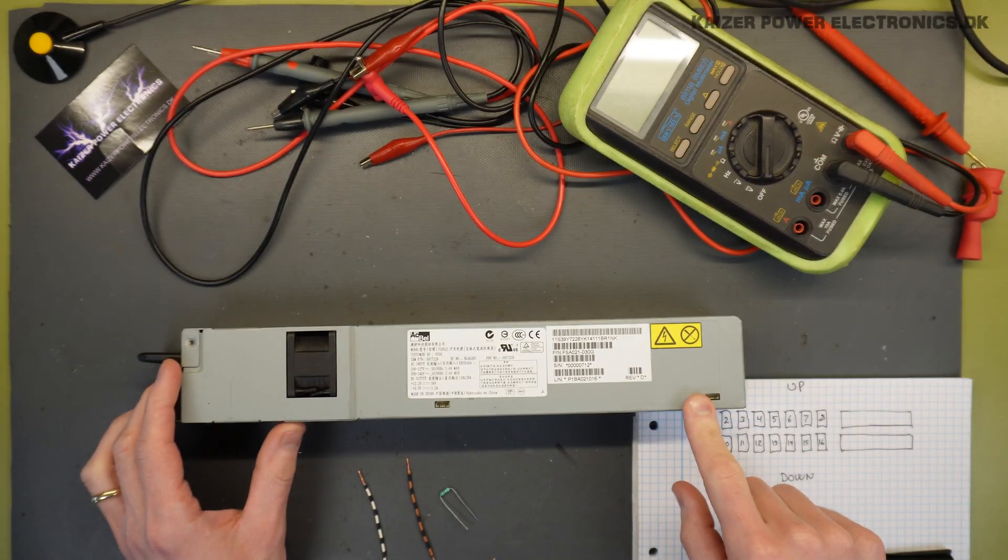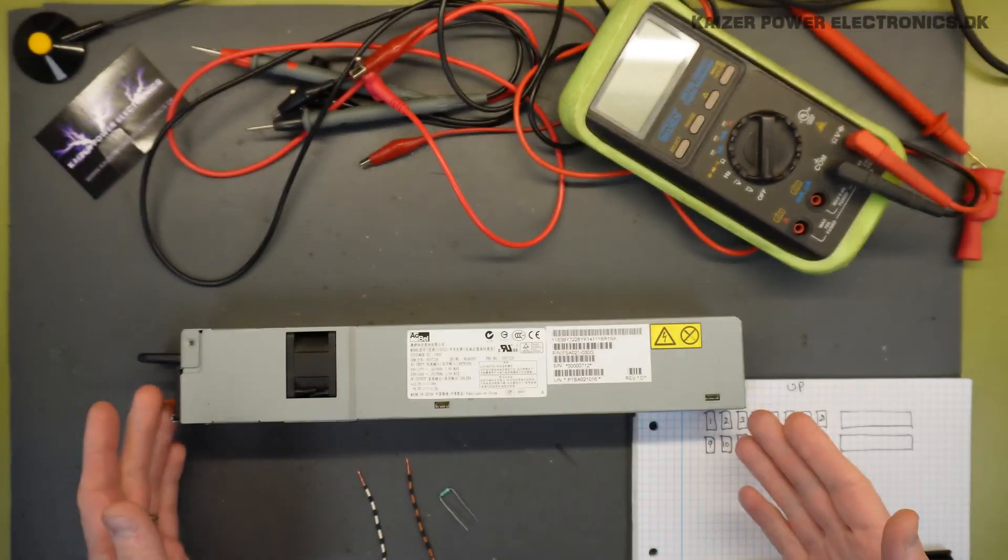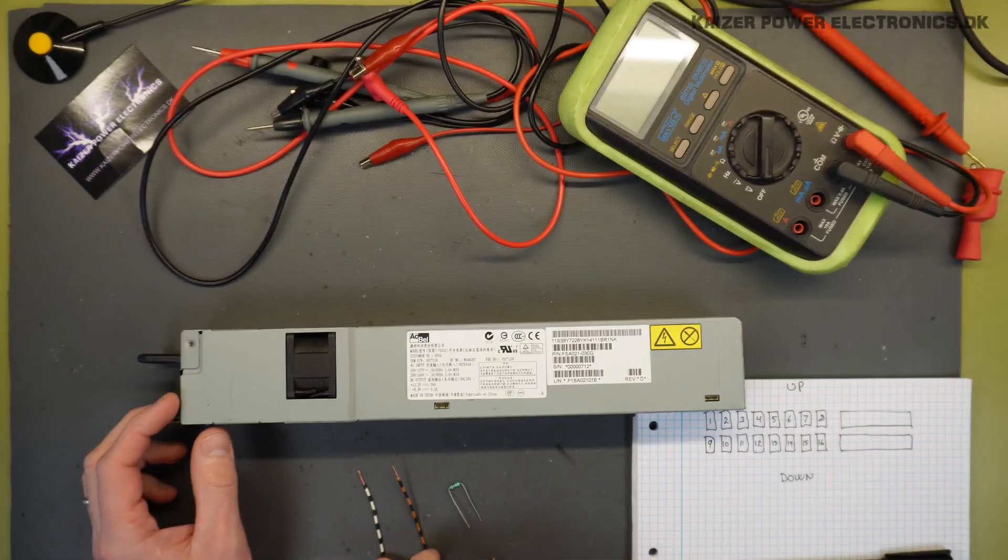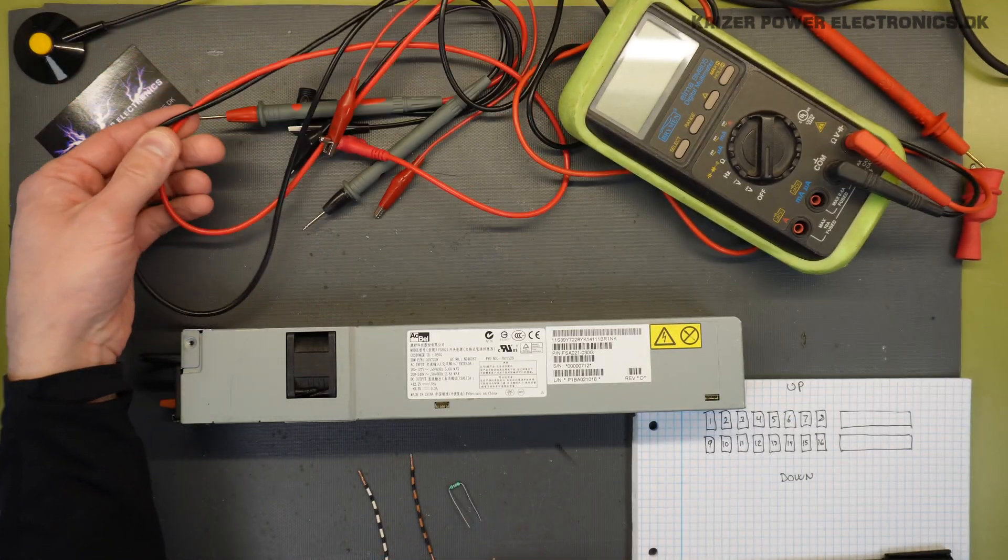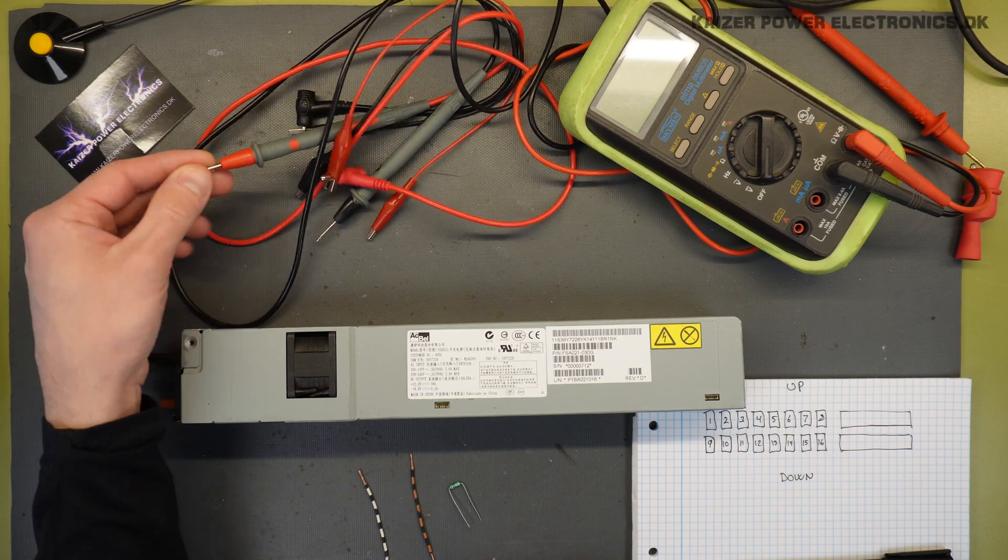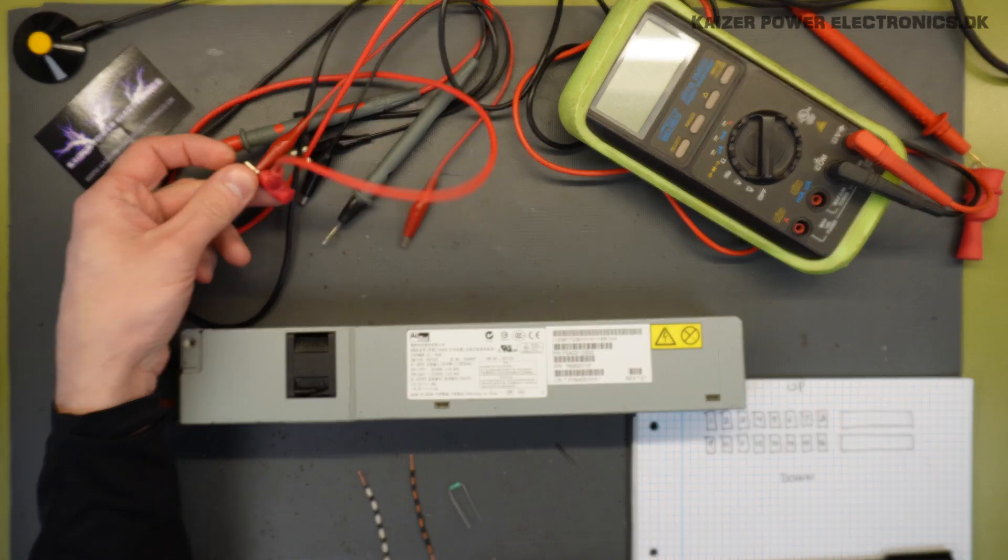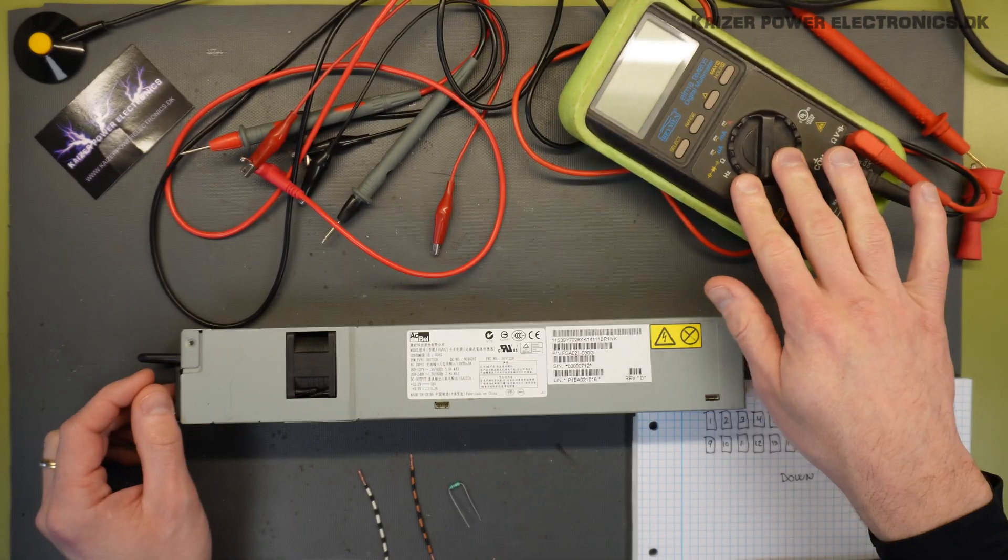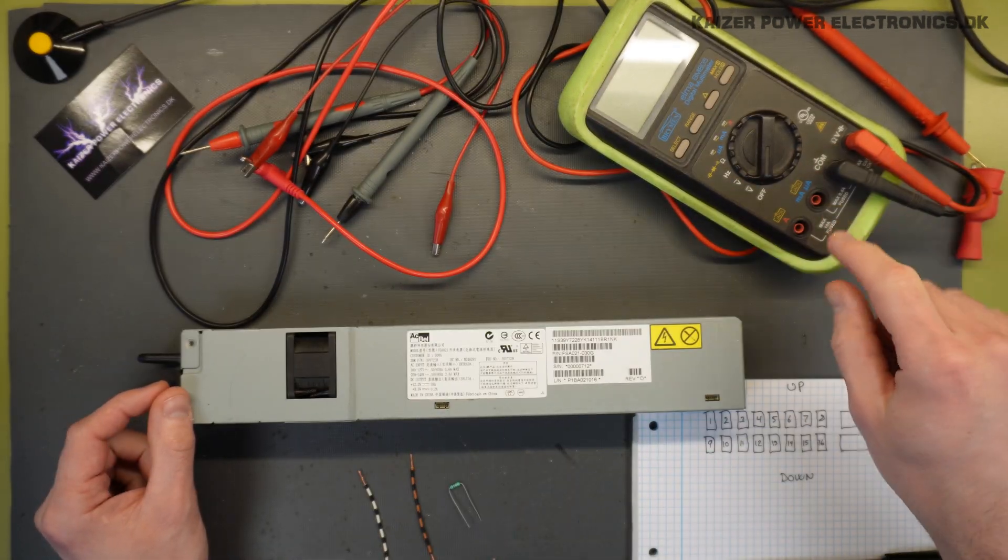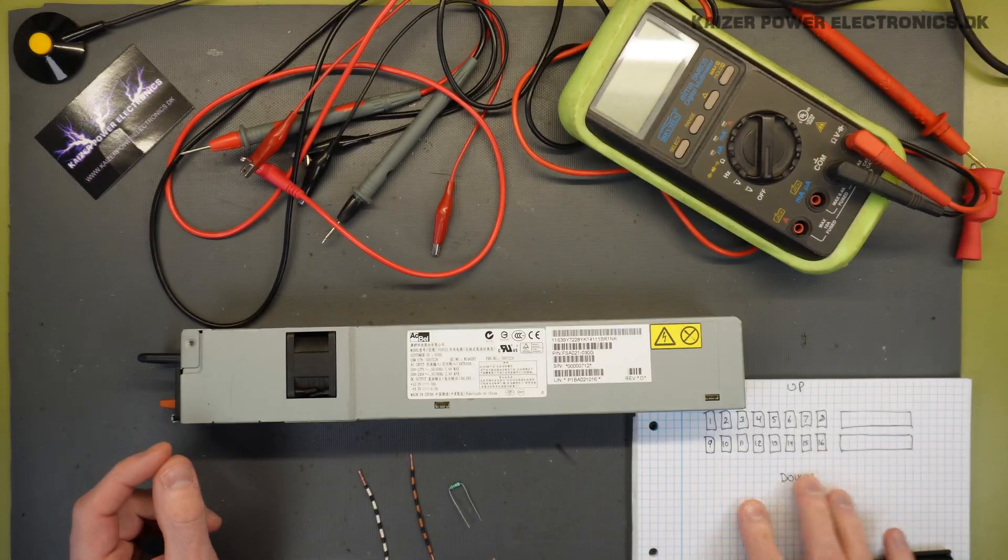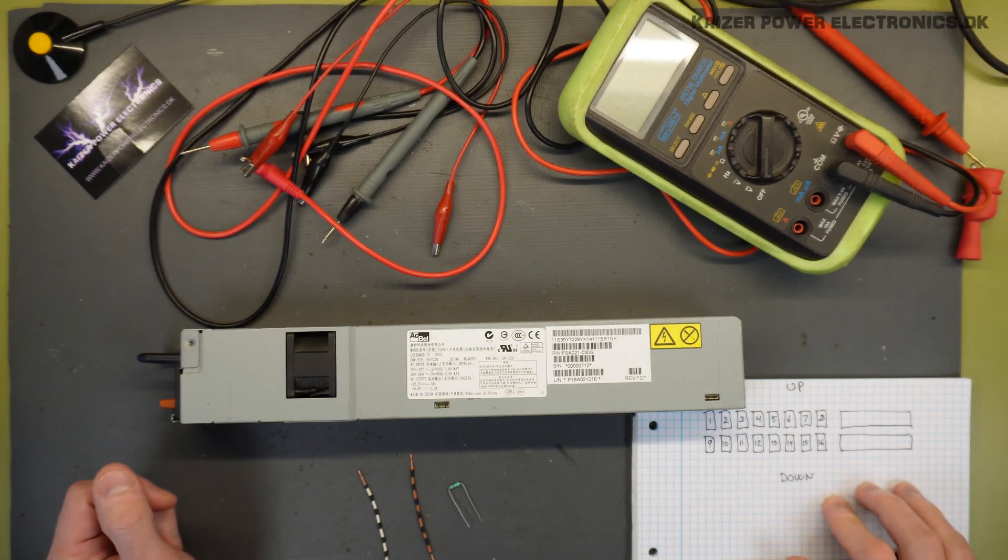To reverse engineer and hack this power supply, what I'm going to use is a 1 kilo ohm resistor, two pieces of wire, some pointy multimeter probes here, which I can fasten the one kilo ohm resistor to, a multimeter for checking continuity and also to measure the voltage when we're trying to make it run, and a piece of paper to write down the pin layout.